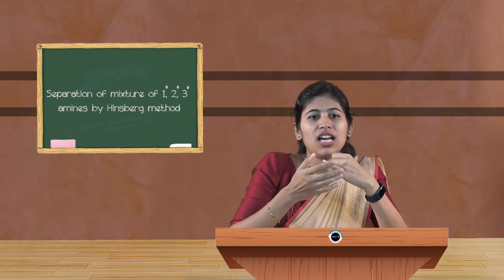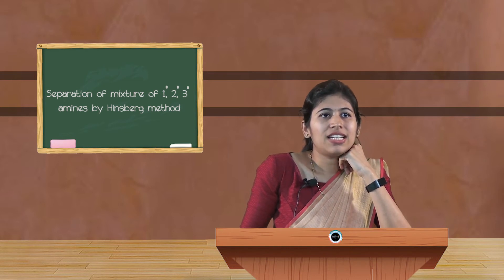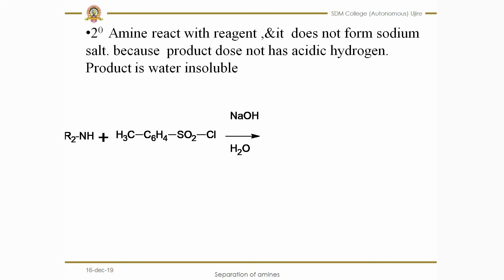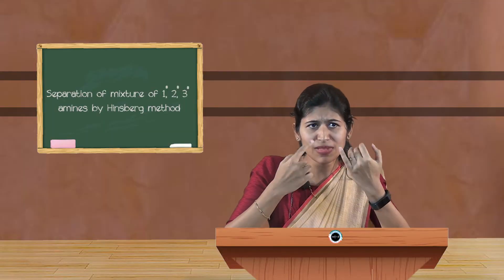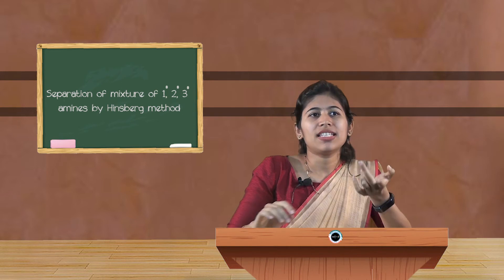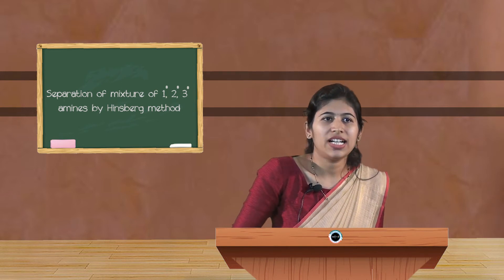For the secondary amine, which has the formula R2NH, when it reacts with the Hinsberg reagent in the presence of sodium hydroxide and water, since it has only one hydrogen, it reacts with the Hinsberg reagent to form N-dialkyl para-toluenesulfonamide. However, it does not react in the second step with sodium hydroxide because there is no remaining acidic hydrogen. The product formed is water-insoluble. So the primary amine product is water-soluble and the secondary amine product is water-insoluble.